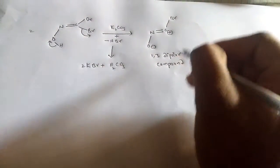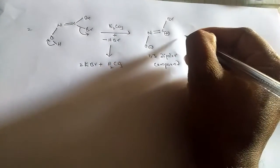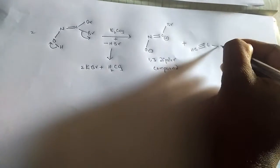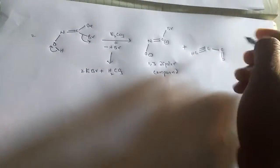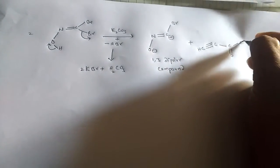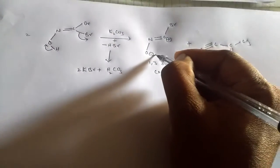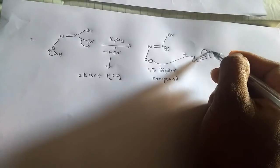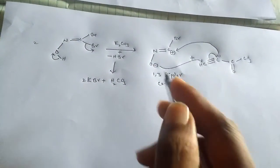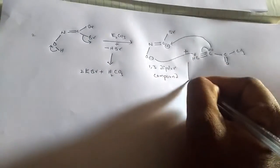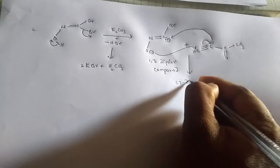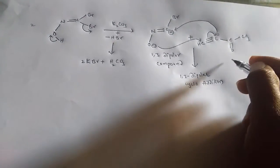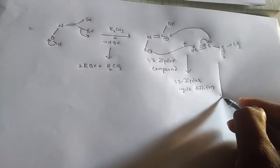Further, this 1,3-dipolar compound reacts with the alkyne in a 1,3-dipolar cycloaddition. The oxygen adds onto this carbon, this bond forms onto this carbon giving a negative charge, and this adds onto the other carbon. This is a 1,3-dipolar cycloaddition reaction.